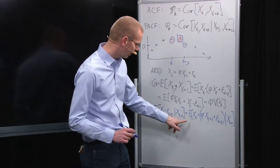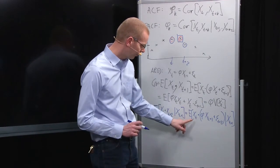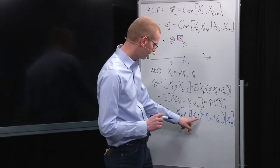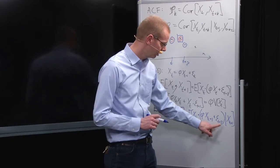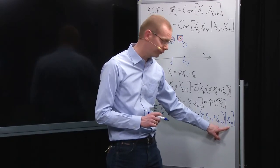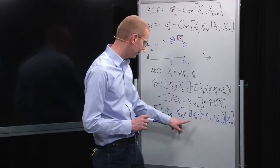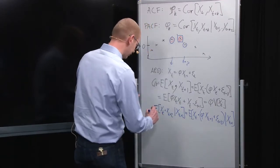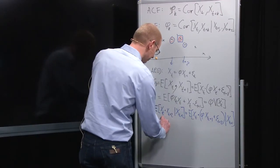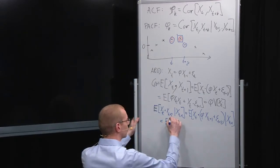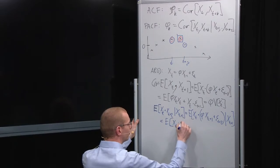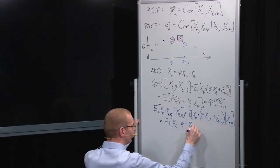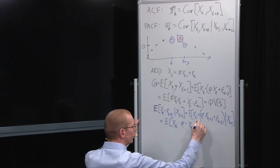Now, when we continue looking at this expression down here, first we look at this, epsilon t plus 2 is out in the future, also future from this. So, there's no contribution from the epsilon there. So, what is left here is the expectation of x t times phi times x t plus 1, given x t plus 1.